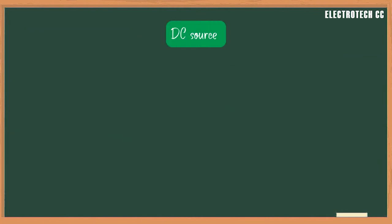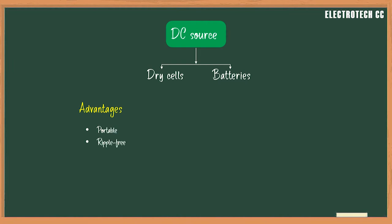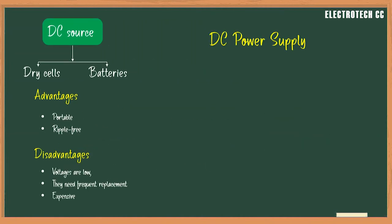Most electronics devices and circuits require a DC source for their operation. Dry cells and batteries are one form of DC source. They have the advantage of being portable and ripple-free. However, their voltages are low, they need frequent replacement, and are expensive compared to a DC power supply. Since the most convenient and economical source of power is the domestic AC supply, there is an advantage to converting AC power to DC power.